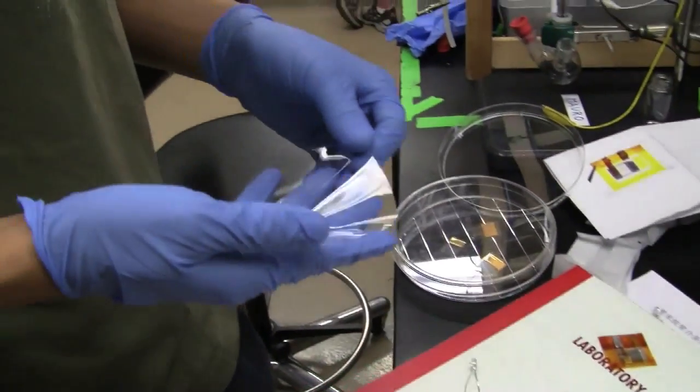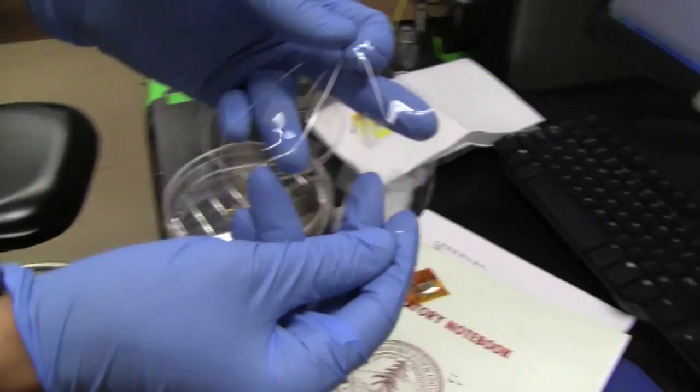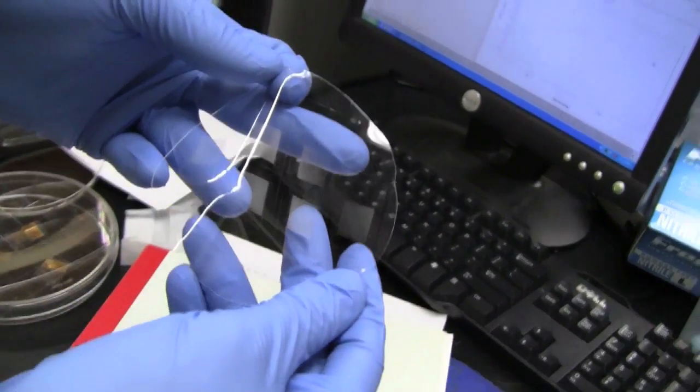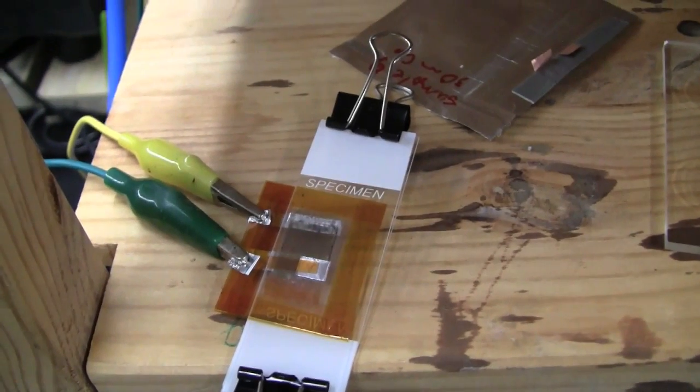The battery electrode materials are then deposited in a mesh pattern that's invisible to the naked eye. The electrodes are cut to size and then sandwiched together with an electrolyte.